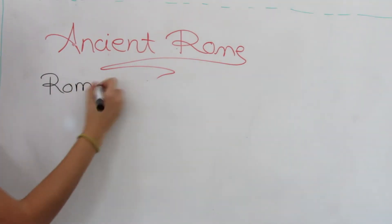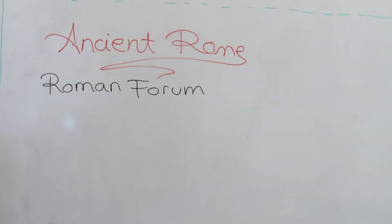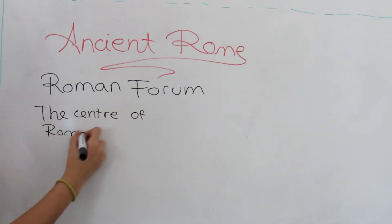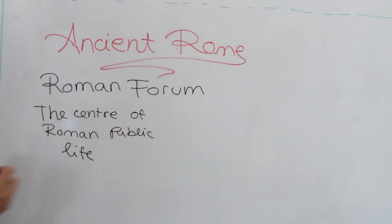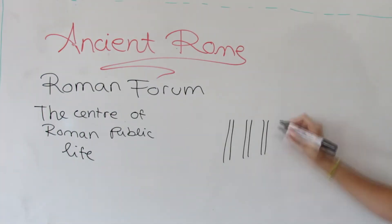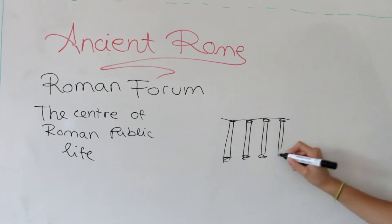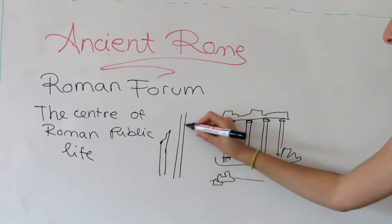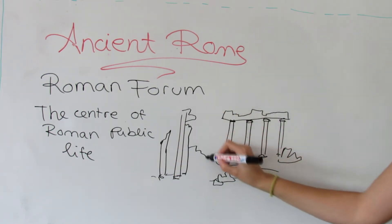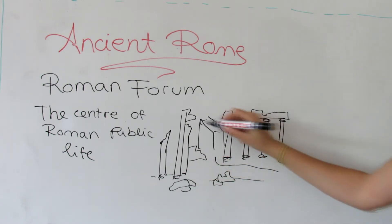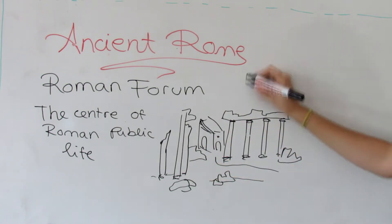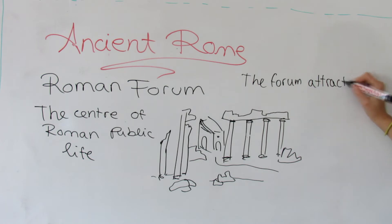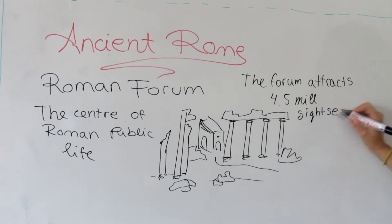The Roman Forum is a rectangular forum surrounded by the ruins of several important ancient government buildings at the center of the city of Rome. It was for centuries the center of Roman public life, the site of triumphal processions and elections. It has been called the most celebrated meeting place in the world and in all history, attracting 4.5 million visitors yearly. Many of the oldest and most important structures of the ancient city were located on or near the Forum.